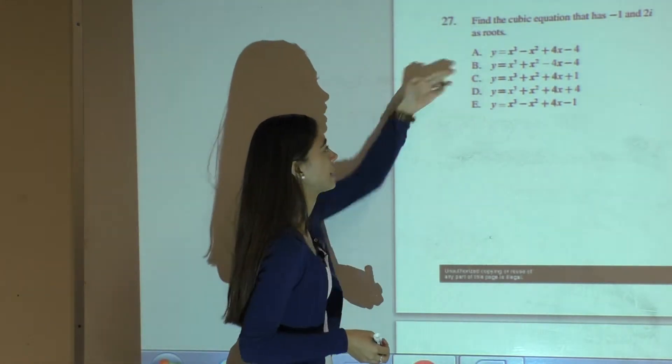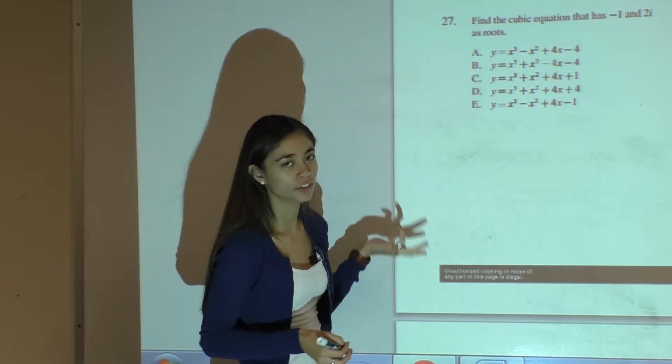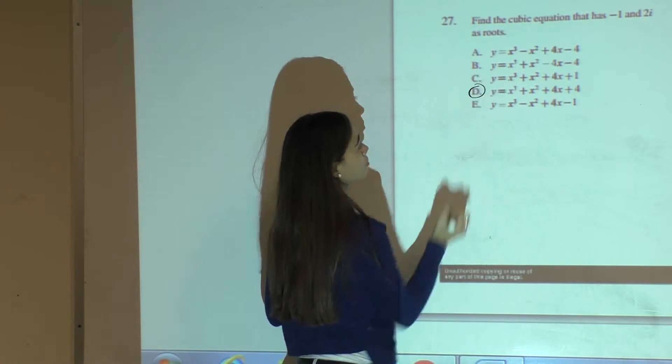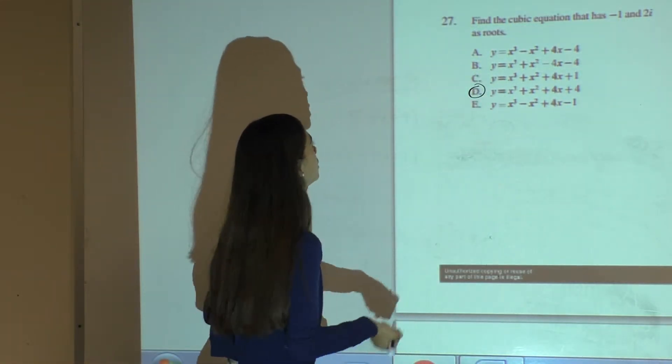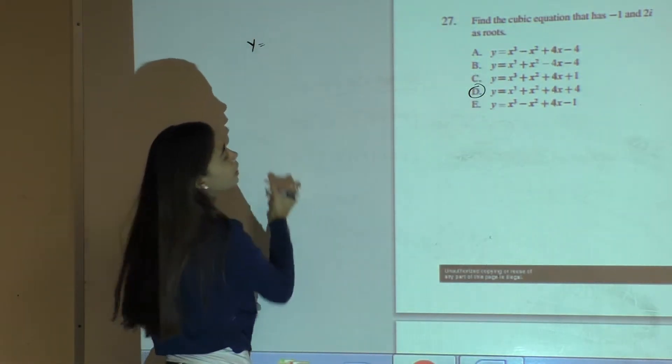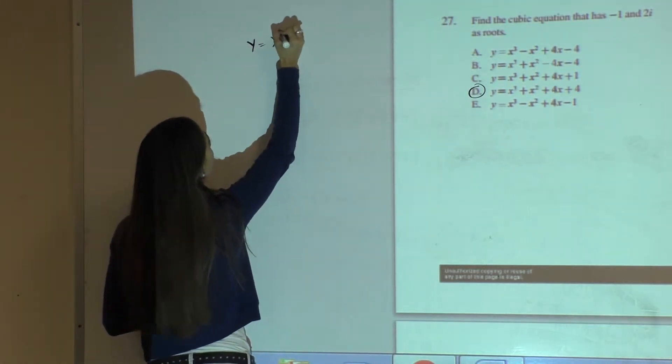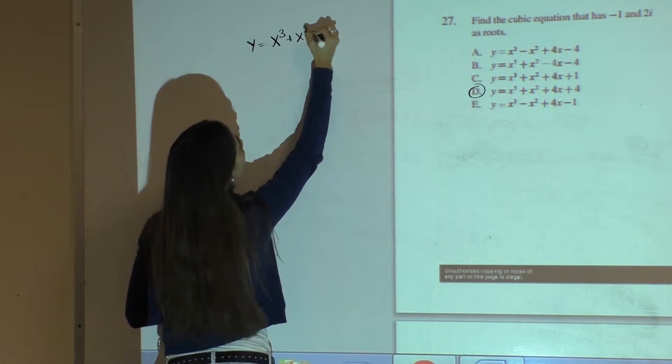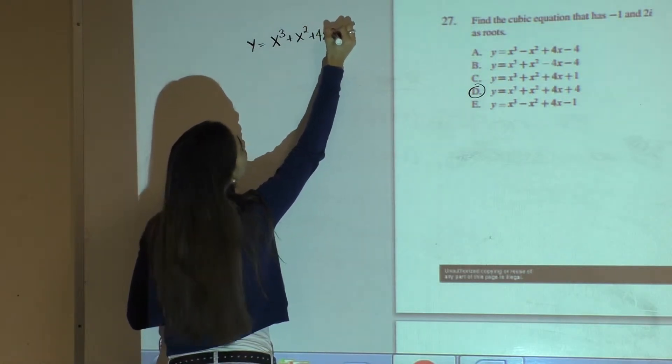Typically you would have to factor out each answer to see which one was correct, but for time purposes, I will show you why D was our answer. In this case, D says y equals x cubed plus x squared plus 4x plus 4.